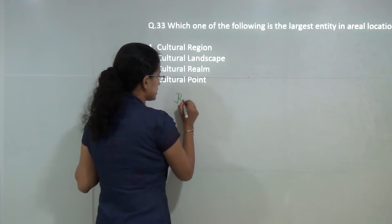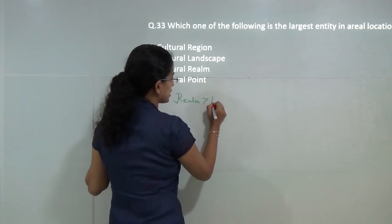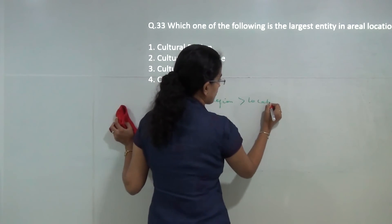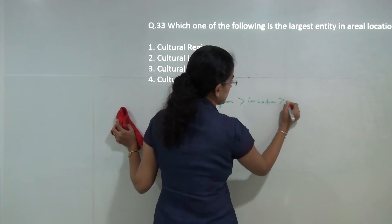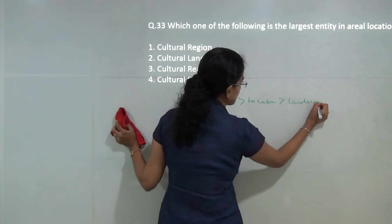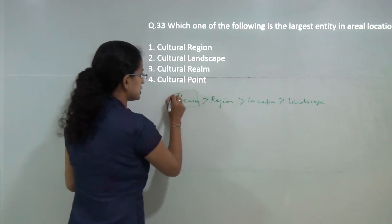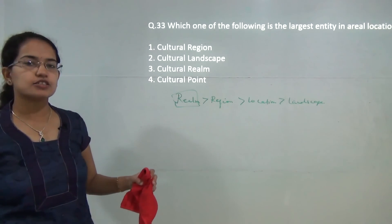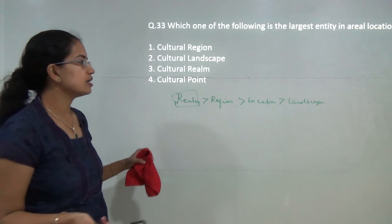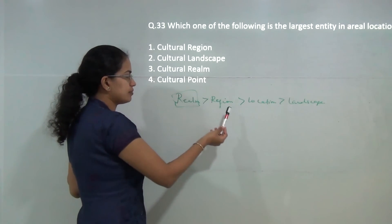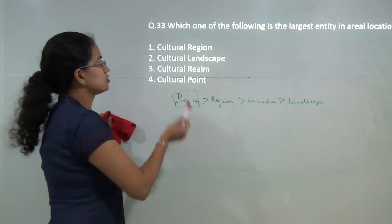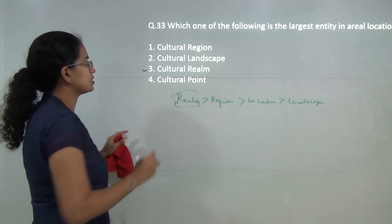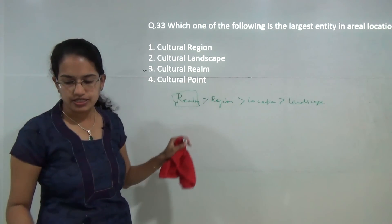The next question is again on a cultural aspect. The basic hierarchy is: Realm is greater than Region, Region is bigger than a Location, and Location is bigger than a Landscape. So the biggest element is a Realm. This applies to cultural realm, economic realm, and so on — in all cases, Realm is the largest entity.